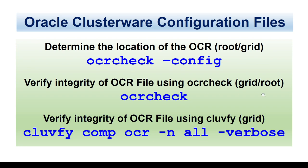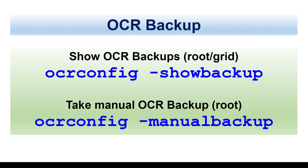For OCR — if you want to get the location of your OCR, you will use OCR config check. If you want to verify the integrity of your OCR, you can use OCR check. You can also use the CLUFFY command to verify the integrity of your OCR file. If you want to see the backups, you can use OCR config show backups. If you want to take a manual backup, you will use OCR config manual backup. Show backup shows all backups — either manual or automatic.